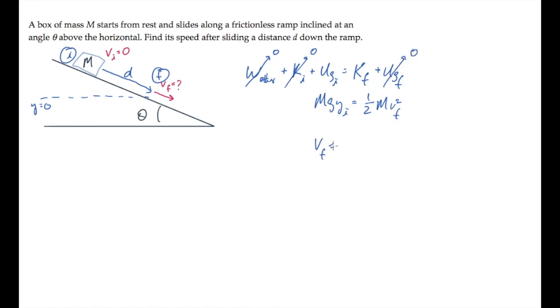The mass cancels and we can solve for the final speed, equaling the square root of 2g times the initial height, y sub i. That height is shown here. From the geometry of the problem, we see that it equals d sine of theta. So the final speed is root 2g d sine theta.